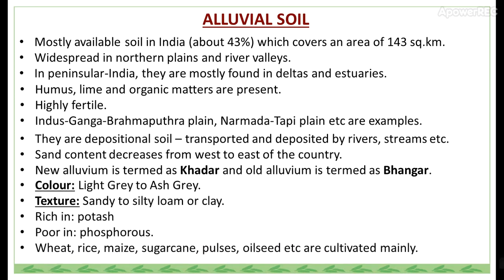The color of alluvial soil is light gray to ash gray. The texture is sandy to silty loam or clay. It is rich in potash but poor in phosphorus. Crops cultivated mainly in alluvial soil include wheat, rice, maize, sugarcane, pulses, and oilseeds.